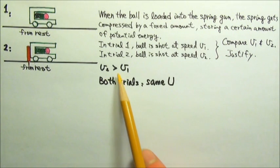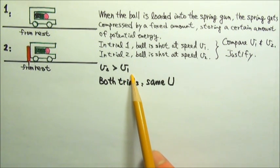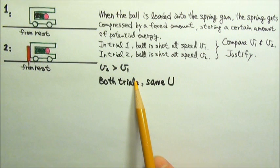V2 is faster than V1. The easiest way to justify this is to look at the energy involved.